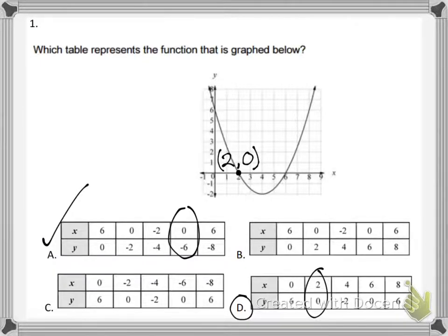If you look at choice A and that coordinate 0 comma negative 6, if you look at your graph, 0 comma negative 6 would be way down here and the graph is existing well above that location. Choice B, you'll notice you're at 6 comma 8. The point 6 comma 8 would be going over 6 and then up 8 units, and that is definitely not where the graph is.